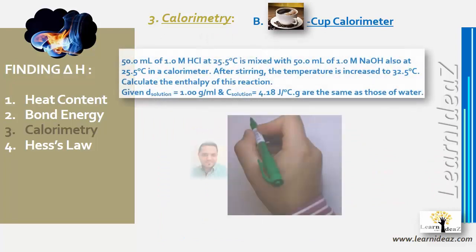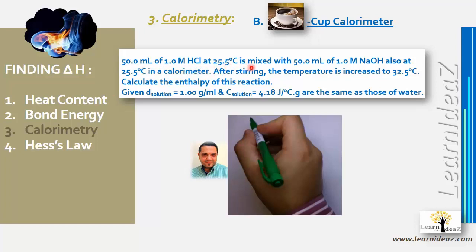Example: 50 mL of 1 M HCl at 25.5°C is mixed with 50 mL of 1 M NaOH at the same temperature. After stirring, the temperature rises to 32.5°C. Calculate the enthalpy change, given density = 1 g/mL and c = 4.18 J/g°C.